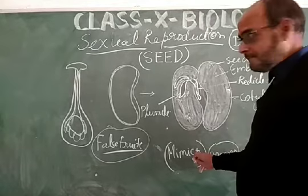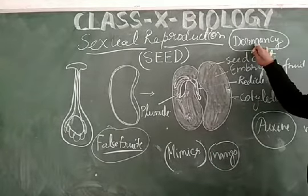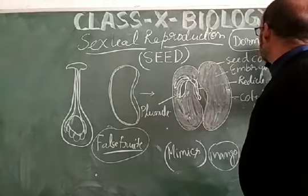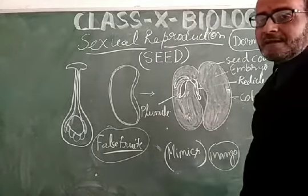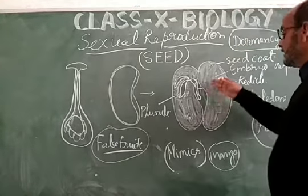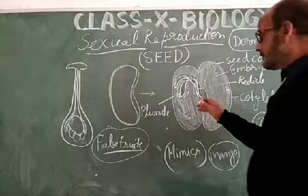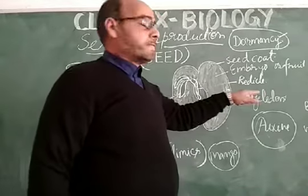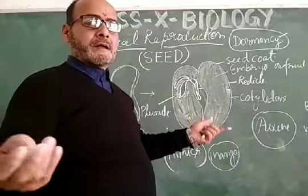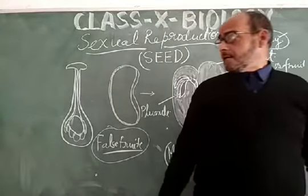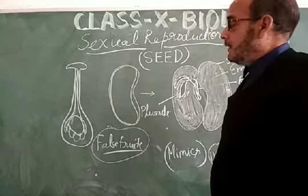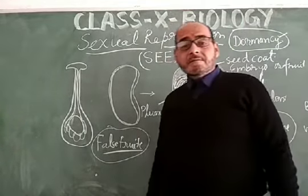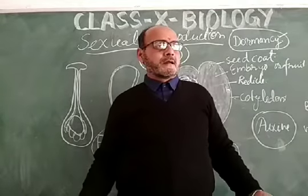To summarize: false fruit is the result of non-fertilization of the embryo; mango is the result of mimic sexual reproduction; dormancy is the condition of a stored seed when it is not in contact with moisture. When it gets moisture, germination takes place, resulting in the formation of radicle and plumule. The radicle develops into the root and the plumule develops into the stem and leaves. This is all about sexual reproduction in flowering plants.